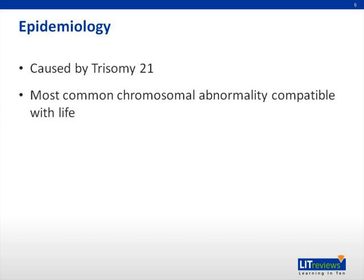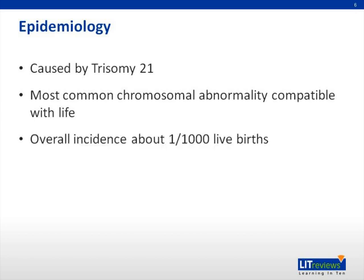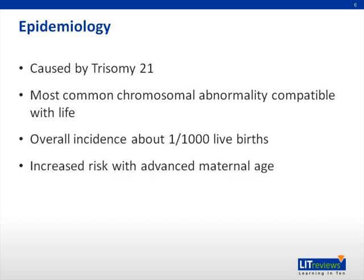Trisomy 21 is the most common chromosomal abnormality compatible with life. The overall incidence is about 1 per 1,000 live births, but is significantly increased among offspring of mothers with advanced maternal age. In young women, the risk is about 1 per 1,500 live births. The risk increases non-linearly, with minimal additional risk until age 35, but a significant risk increase between ages 35 and 45. Women over 35 account for about half of all cases.